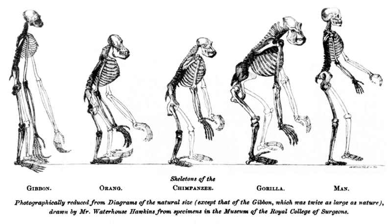In the 18th century Linnaeus and others had classified man as a primate, but without drawing evolutionary conclusions. It was Lamarck, the first to develop a coherent theory of evolution, who discussed human evolution in this context. Robert Chambers in his anonymous Vestiges also clearly made the point. The book came five years after Charles Darwin and Alfred Russell Wallace announced their theory of evolution by means of natural selection, and four years after the publication of Darwin's Origin of Species.